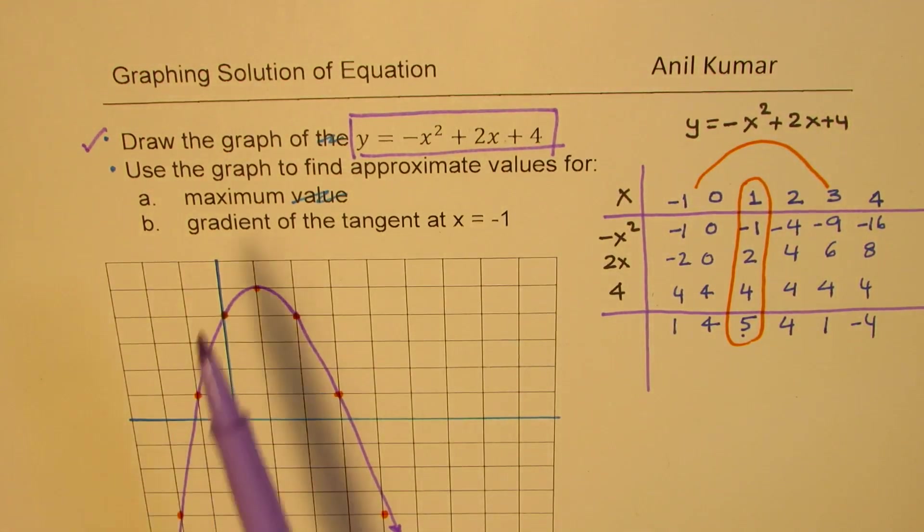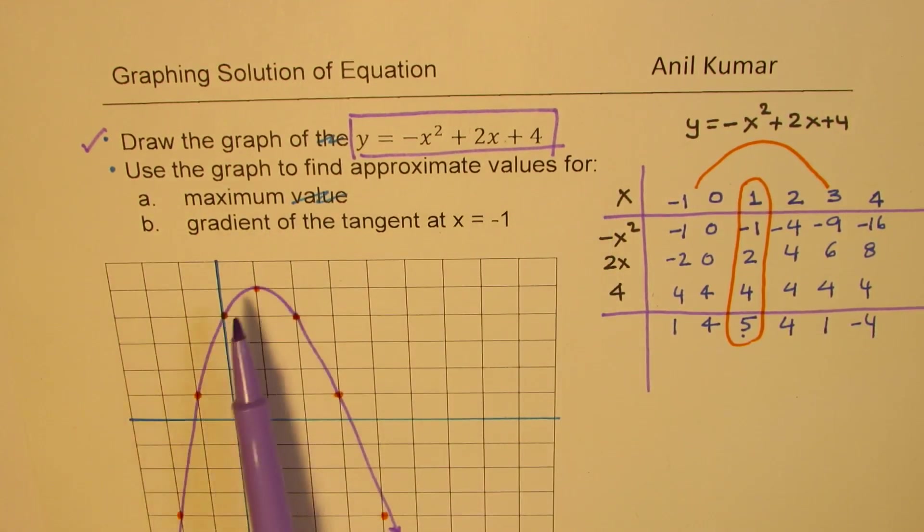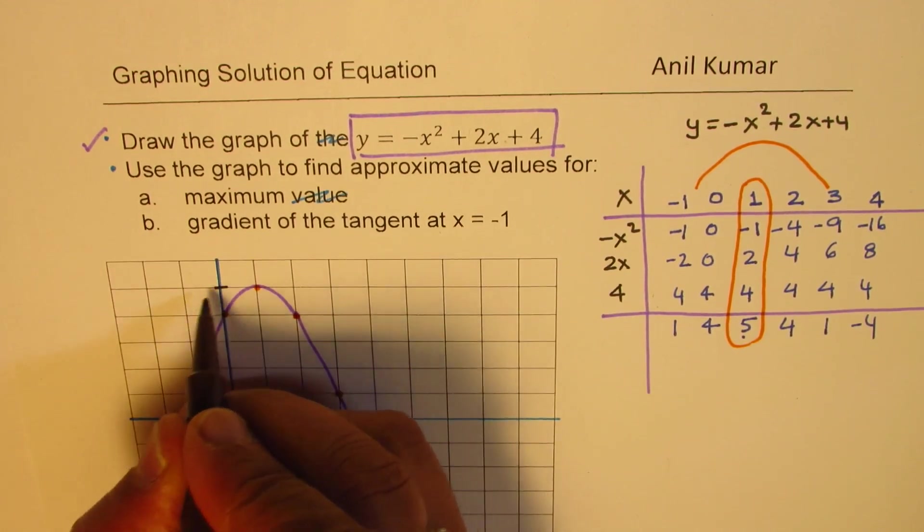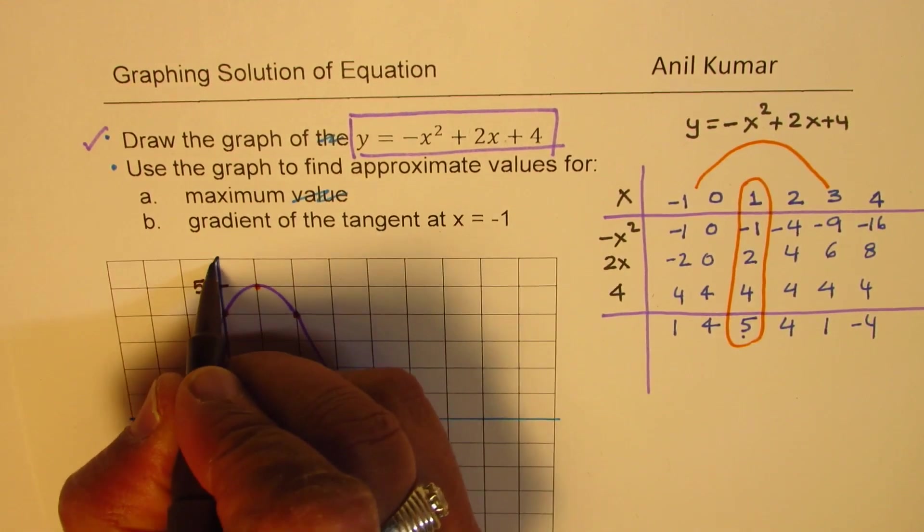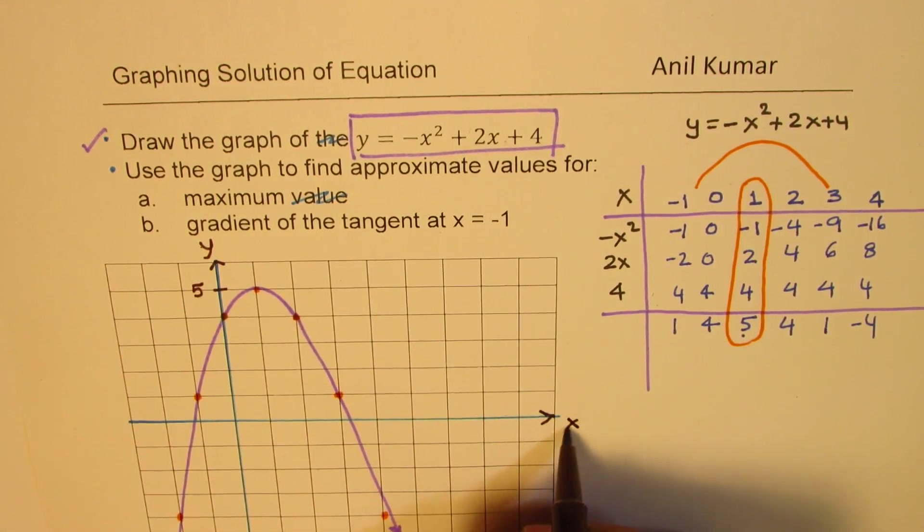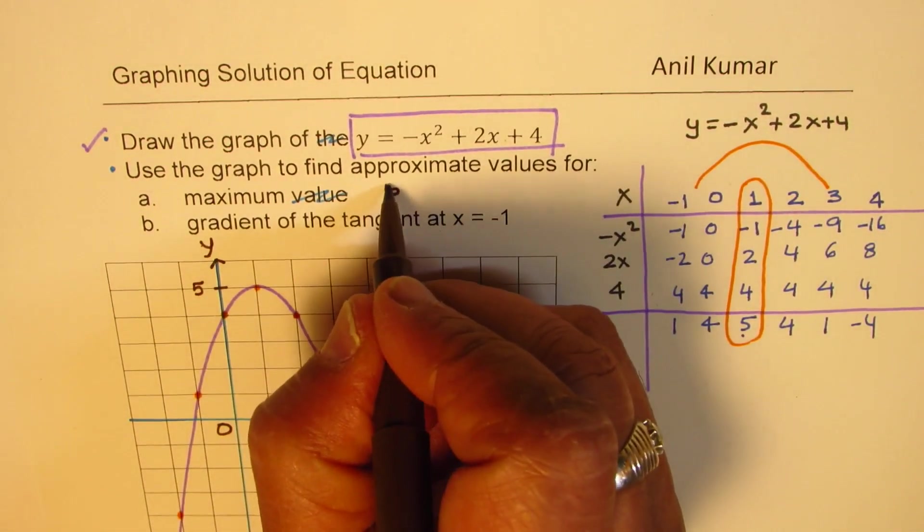Second part is: use the graph to find the approximate value of the maximum. Clearly, the maximum is the turning point. We have the maximum value, which is 1, 2, 3, 4, 5. This is 5 for us. This is y-axis, that is the x-axis. This is 0. So, we have maximum value as 5.